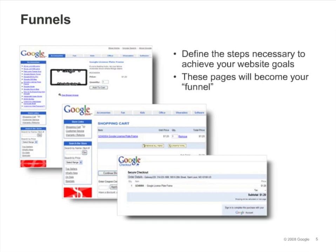A sales checkout process is a good example of a funnel, and the page where the visitor enters credit card information is an example of one of the funnel steps. The goal page signals the end of the activity, such as a thank you or confirmation page, and the funnel steps are the pages that visitors encounter on their way to the goal.